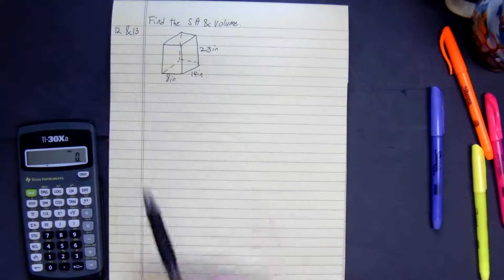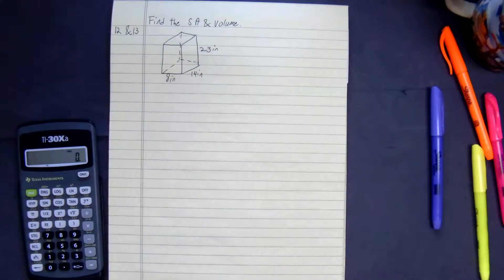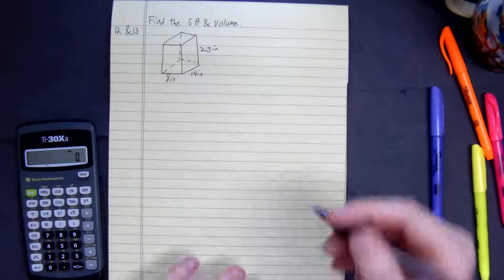We'll look at number 12 and number 13. We have a rectangular prism, and we're going to be finding the surface area and volume of it.